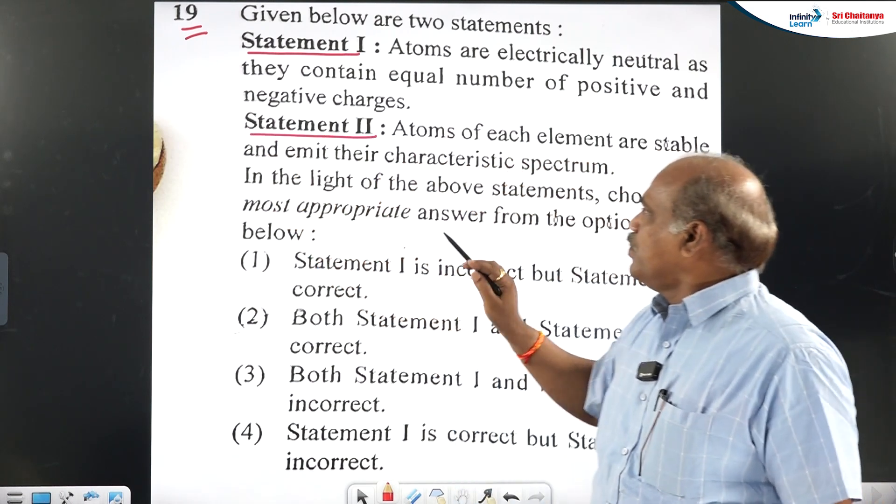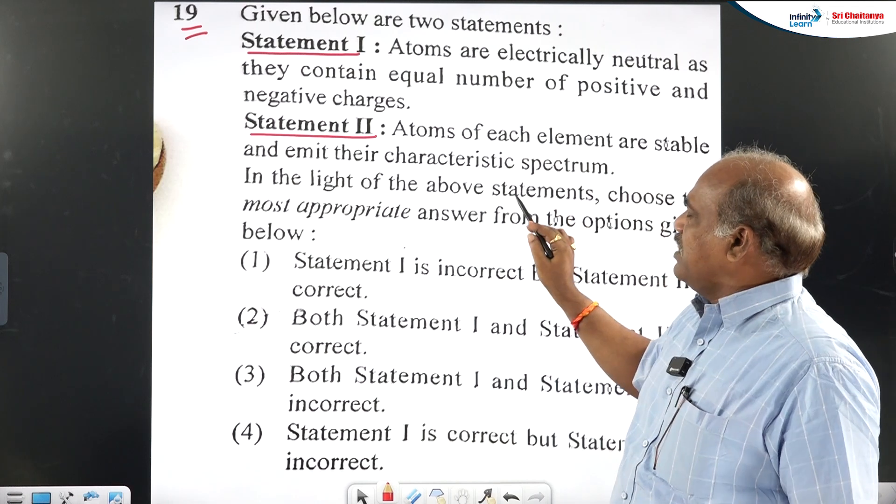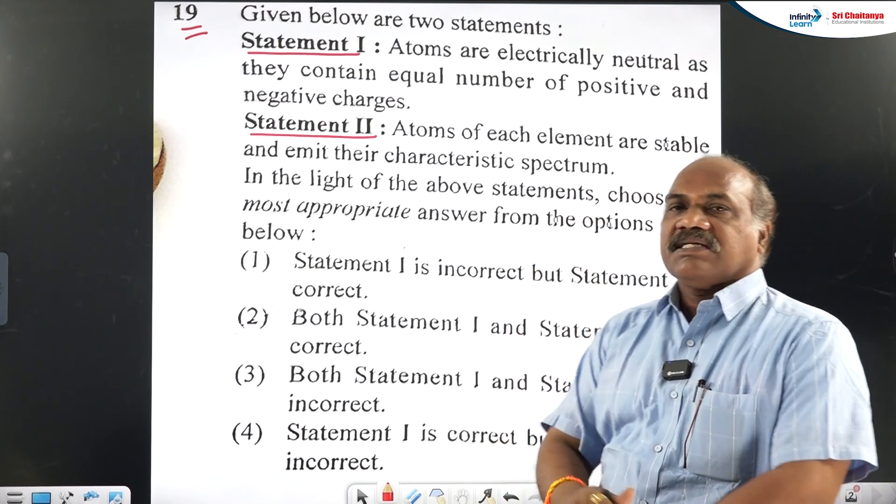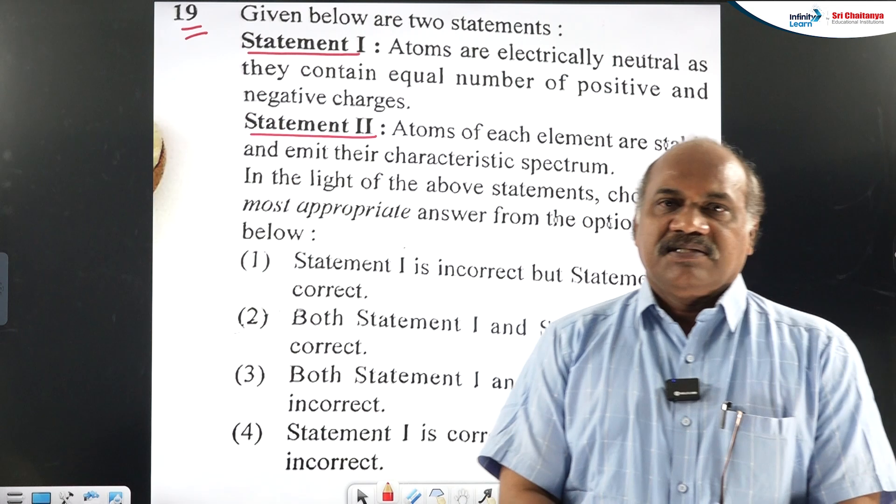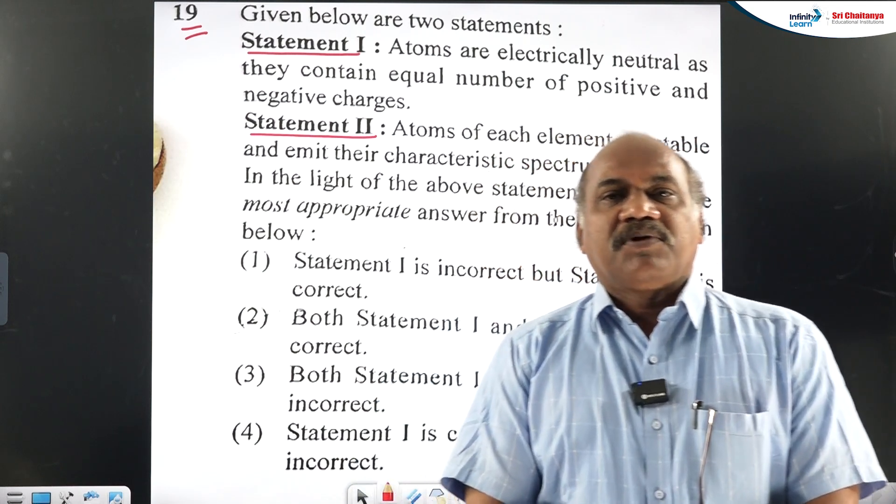And statement 2: Atoms of each element are stable and emit their characteristic spectrum. These two statements are given from the chapter atoms.